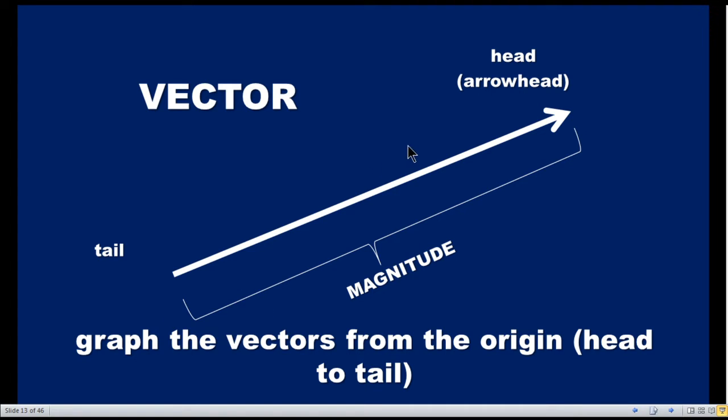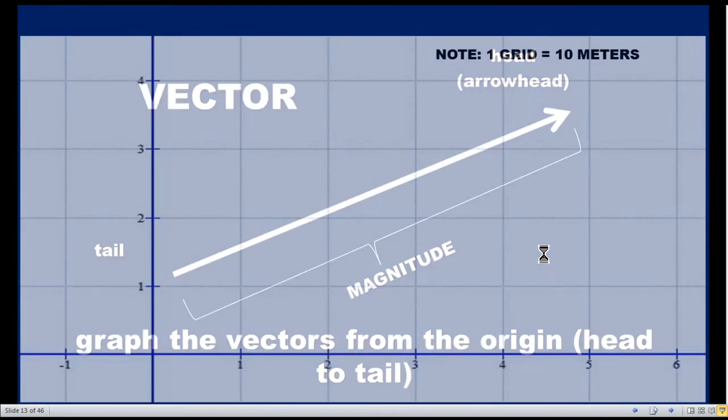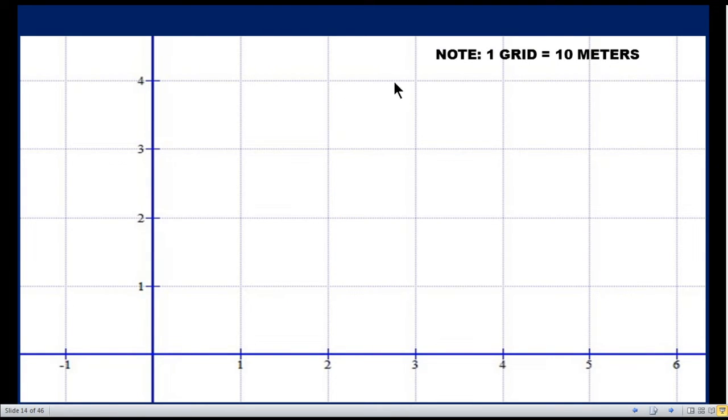This is the vector graph. Draw the vectors from the origin, tail to head. So this is the graph paper. One grid means 10 meters. One grid is equal to 10 meters. So two means 20 meters, three means 30 meters, four means 40 meters.